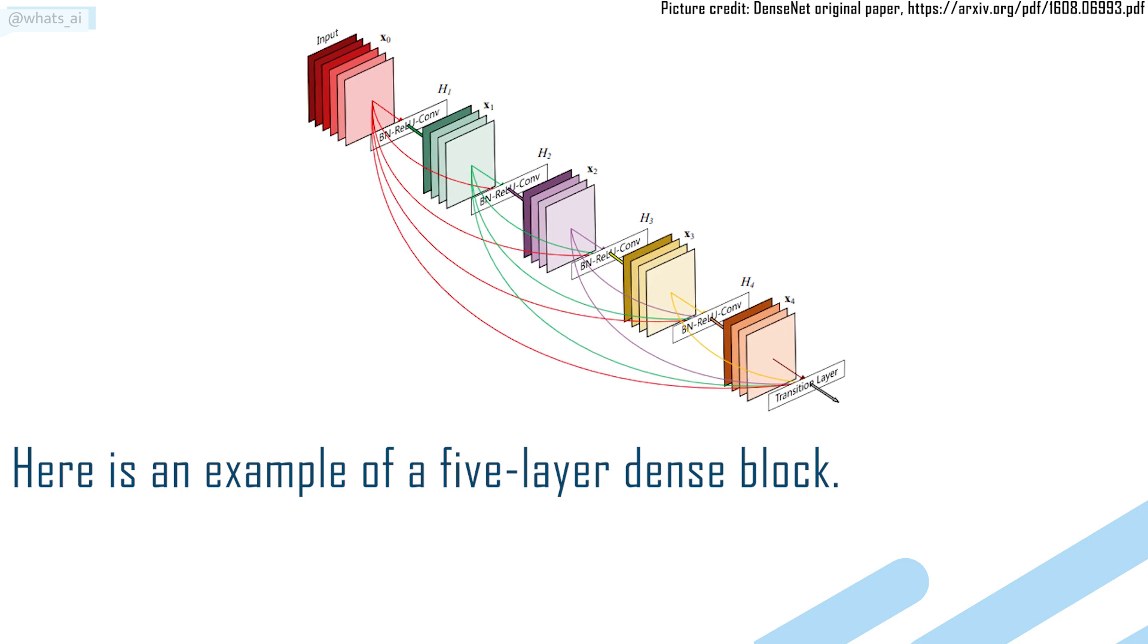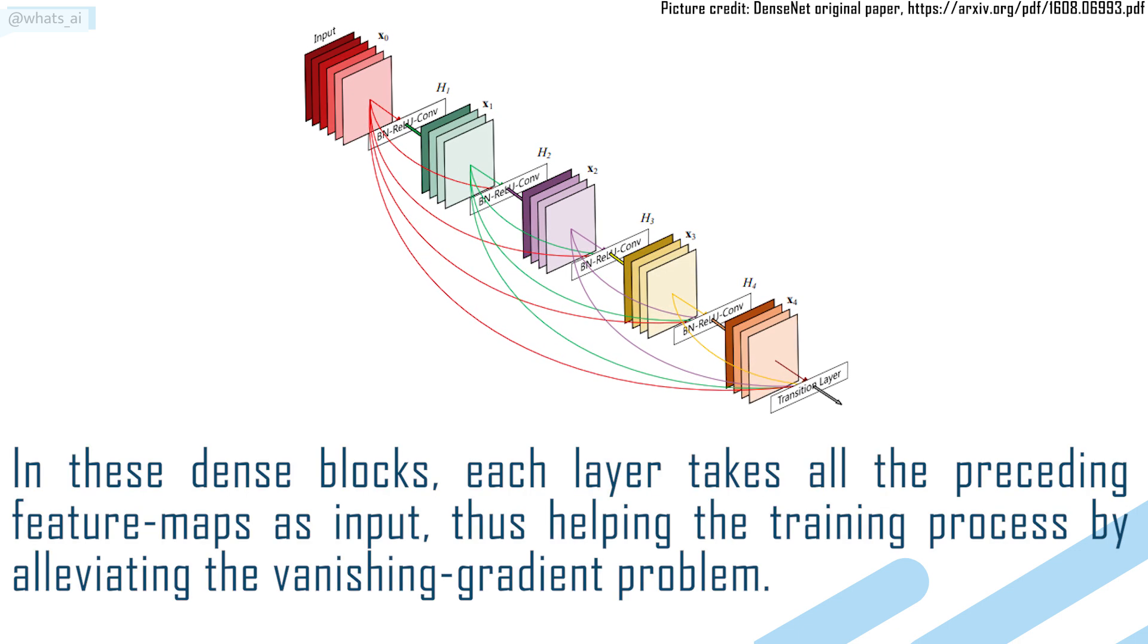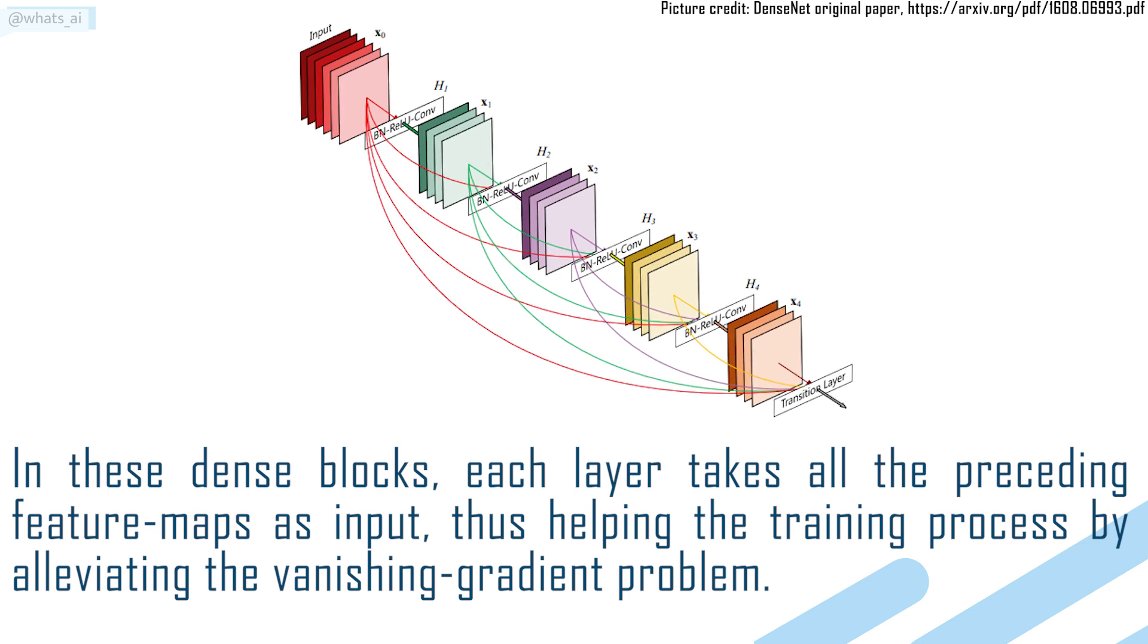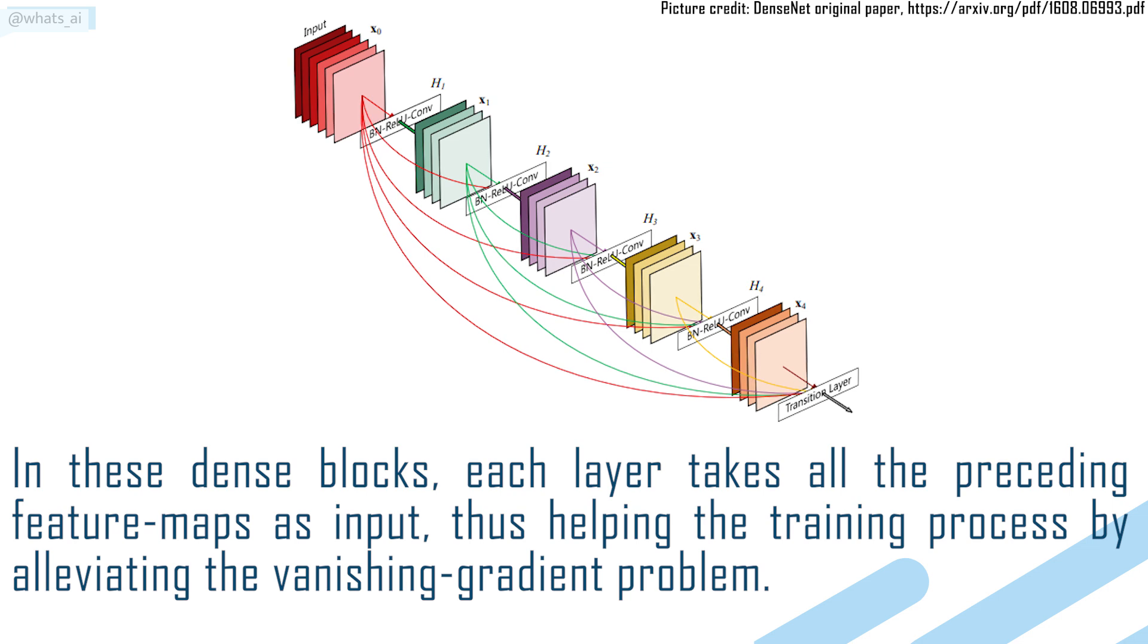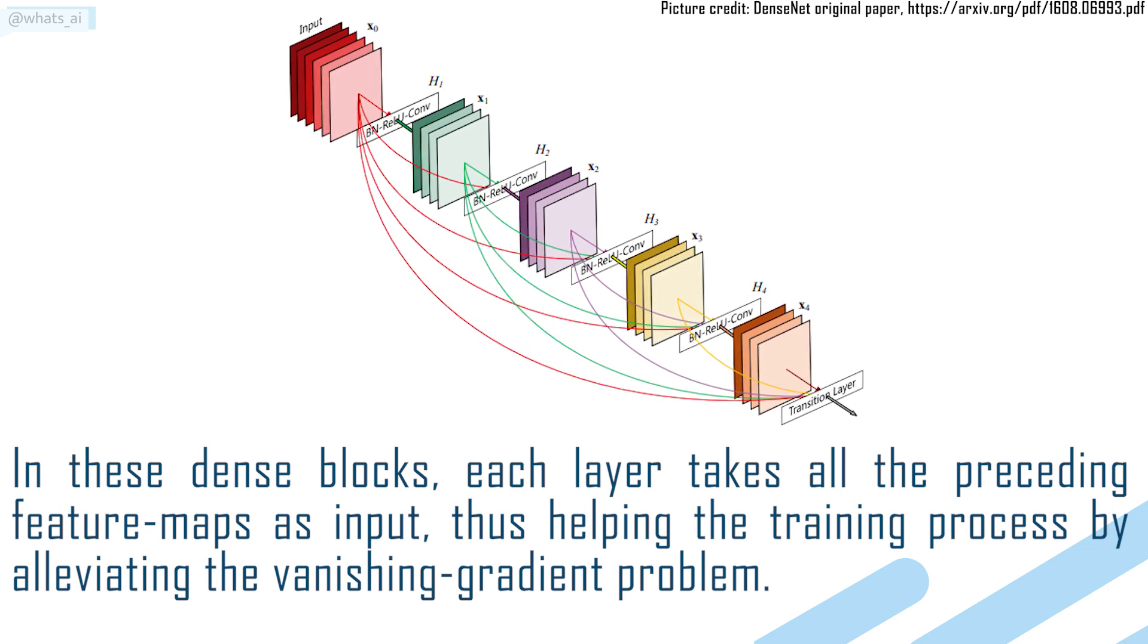Here is an example of a 5-layer dense block. In these dense blocks, each layer takes all the preceding feature maps as input, thus helping the training process by alleviating the vanishing gradient problem.